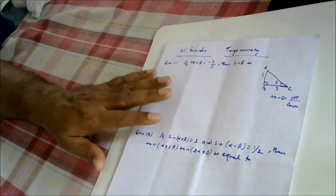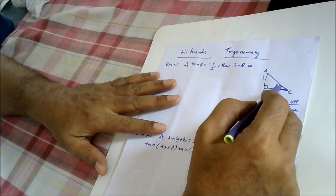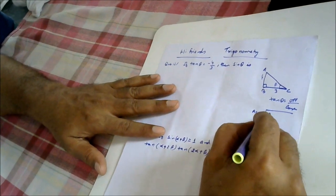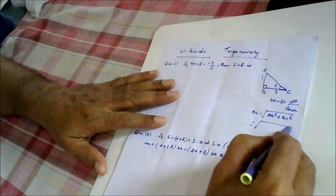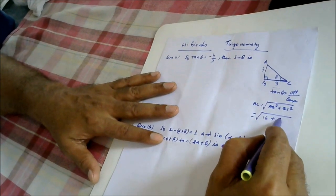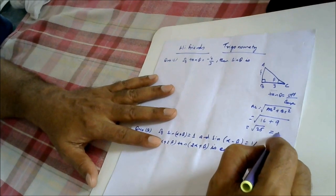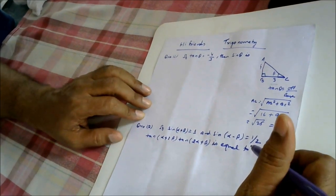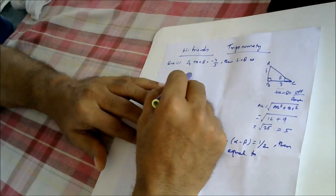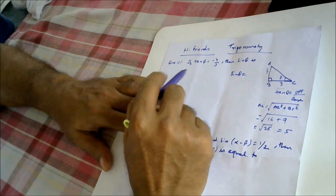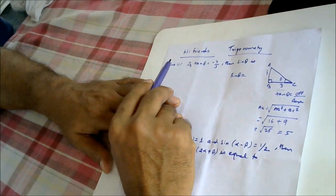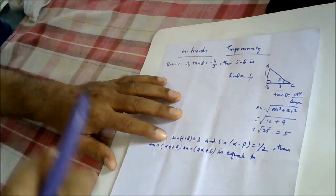Utilizing that concept, we will be able to find sin θ. For sin θ we need the hypotenuse. Hypotenuse AC we can find out by: AB² + BC² = 4² + 3² = 16 + 9 = 25, so hypotenuse equals 5. Now sin θ is opposite by hypotenuse, that is AB by AC, so it will be 4 by 5.